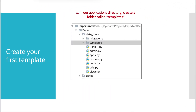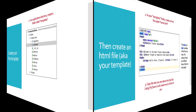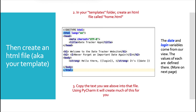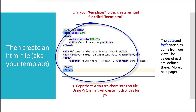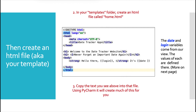We'll create our first template. The first thing to do is in our application's directory called date_track, create a folder called templates. Second, from within that folder, create your HTML file — we're going to call it home.html. If you're using PyCharm, when you do a right-click and select HTML, it's going to create much of this infrastructure for you. So we have in the title 'Date Tracker App,' then H1 tags with 'Welcome to the Date Tracker Application,' H2 in italics 'Never forget an important date again,' and then in strong tags 'Hello there,' followed by the variable date in double curly brackets, and the variable login — which we'll see on the very next slide.